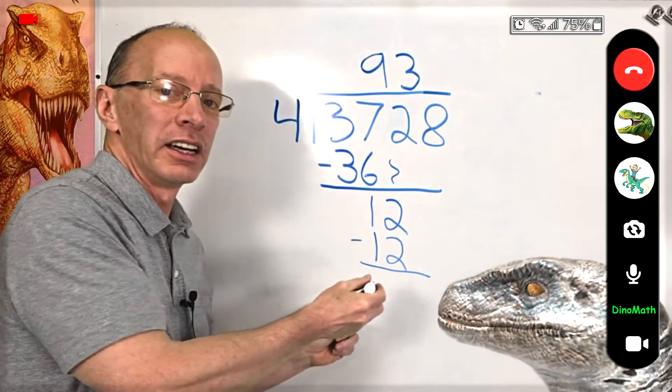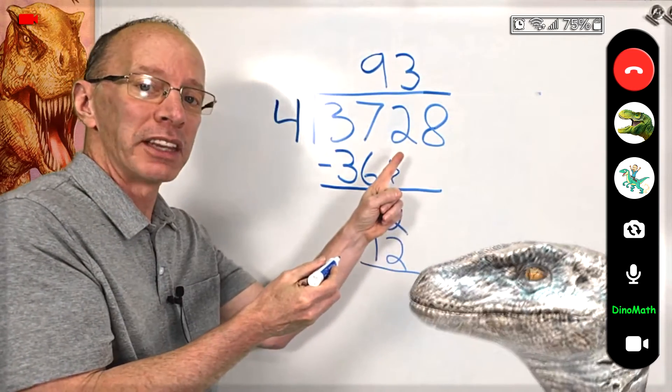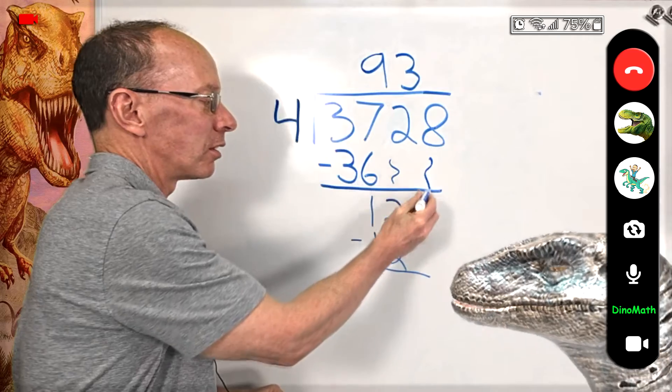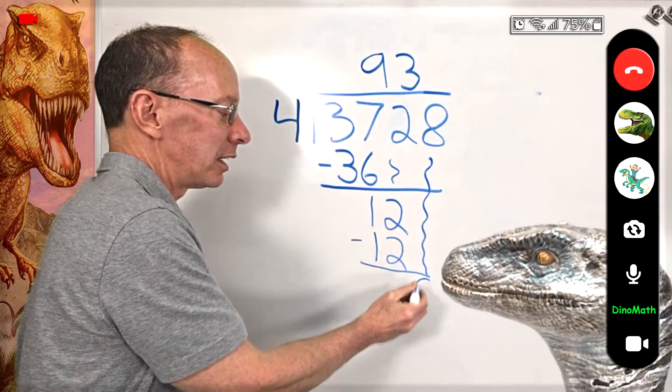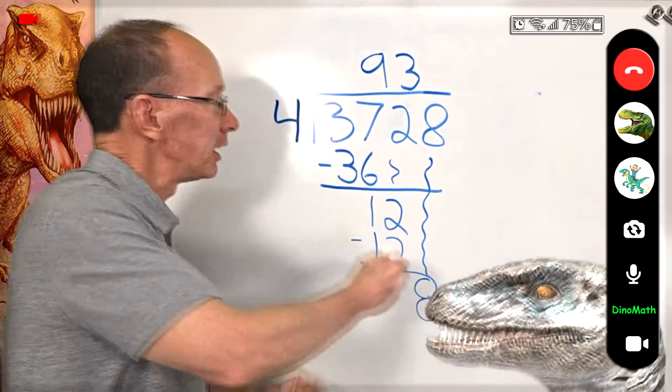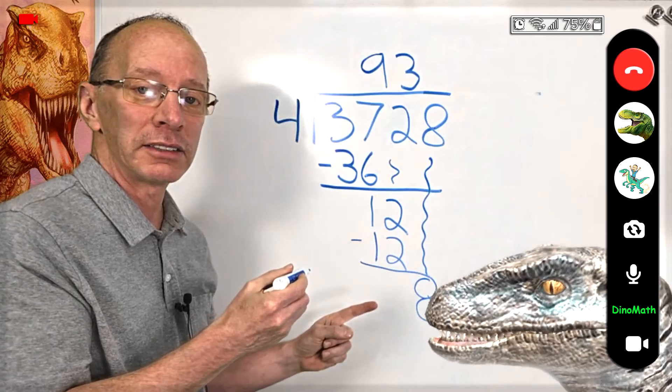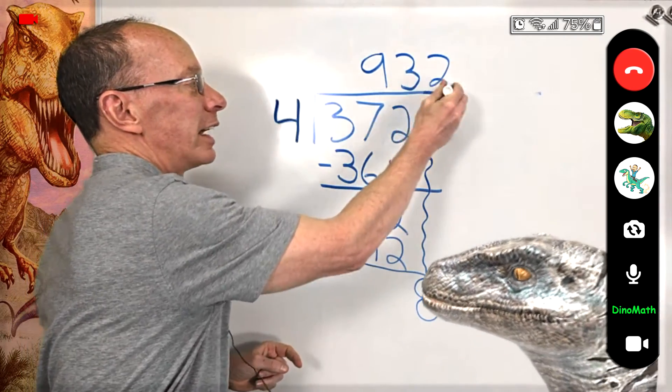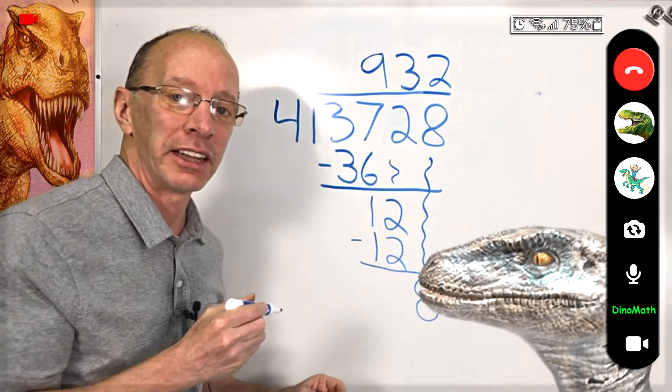Then you drop the next number down, all the way down here. And there's our 8. How many times does 4 go into 8? 2 times. All right. So our answer is 932.